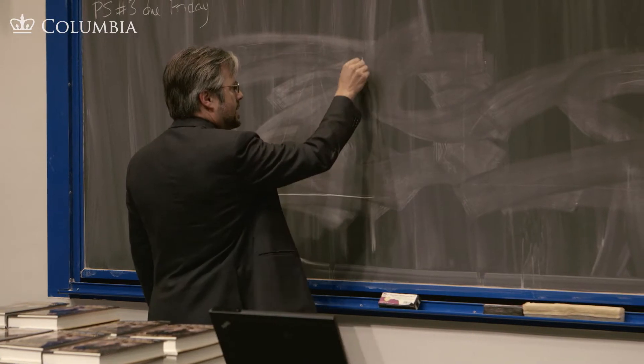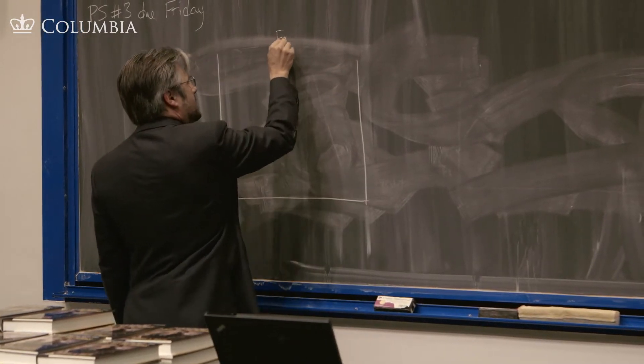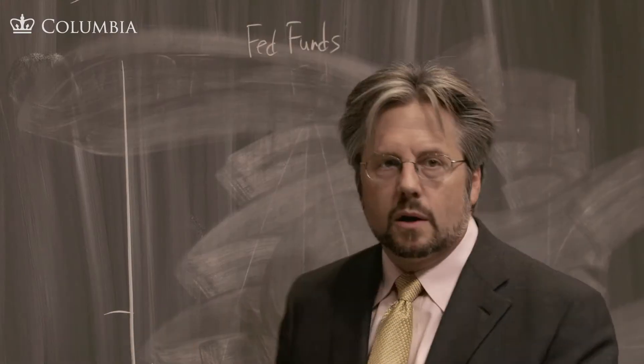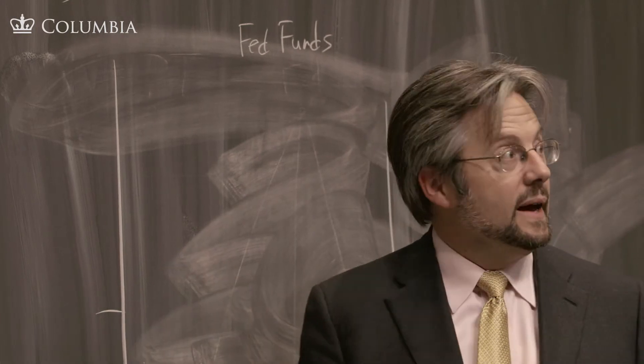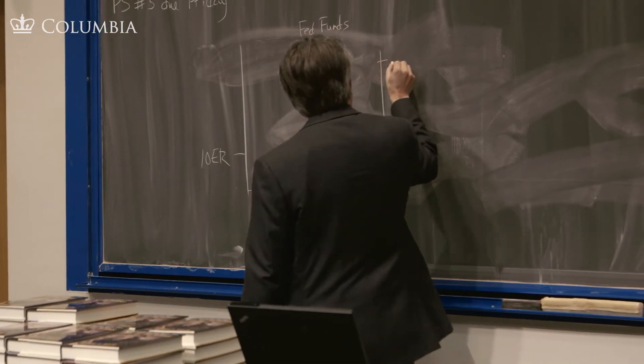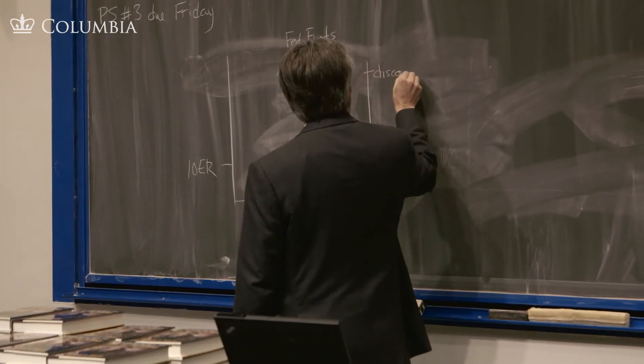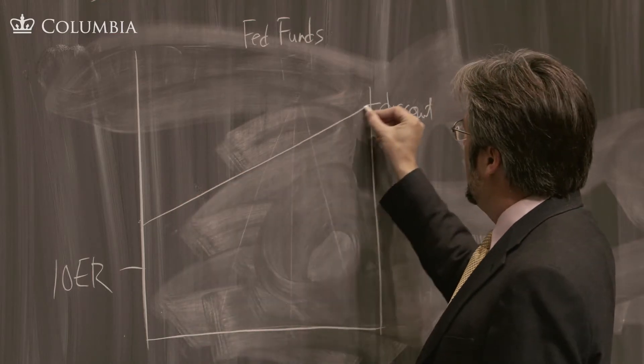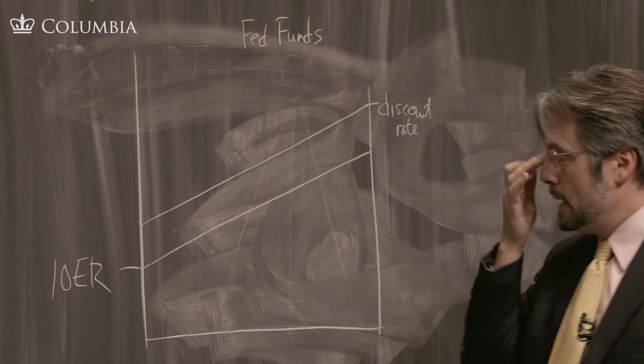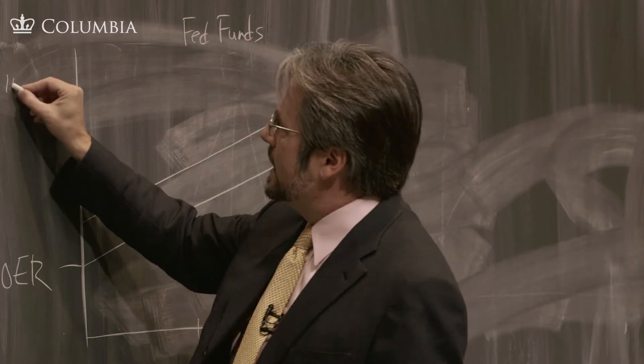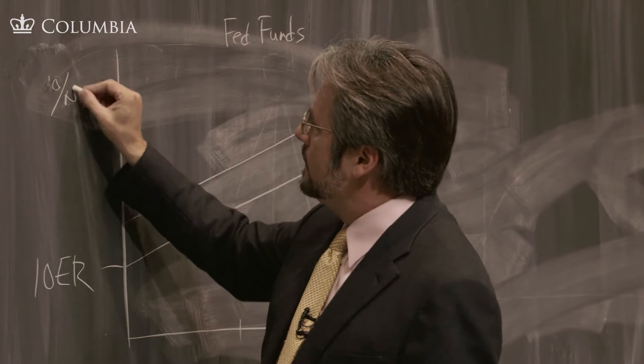So, we'll start here on the left with the Fed funds market. And you'll remember that we were talking about a kind of outside spread that was set by the central bank. We have the interest on excess reserves and the discount rate as the outside spread, and there is an upward sloping sort of bid-ask kind of line here. And so, this is an interest rate here. But it's an overnight interest rate.